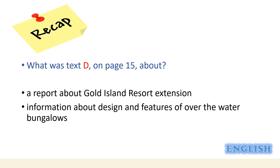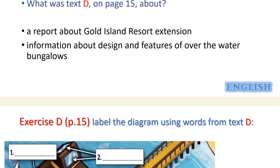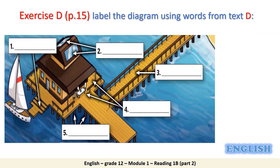Let's check this together. What you see is the diagram which reflects the design of the over-the-water bungalow and shows its features. In exercise D, page 15, we will label the diagram using words from text D. We should refer to text D to complete this diagram. Do not use more than two words for each answer. Stop the video and do the task.